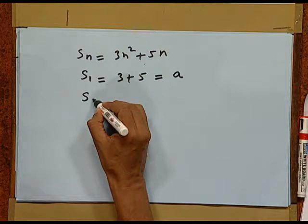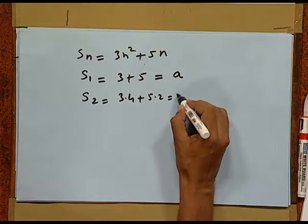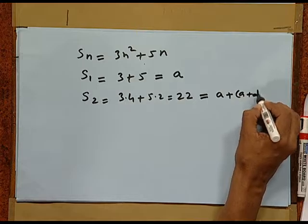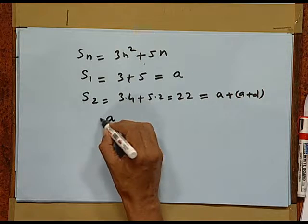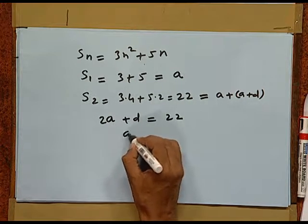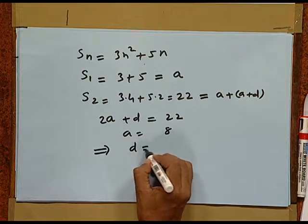Now, put n equal to 2. You get s2 is equal to 3 times 4 plus 5 times 2, that is 22, and this is nothing but first term plus second term. Thus, we have 2a plus d is equal to 22, while a is equal to 8. This gives d is equal to 6. And now we know both a and d, we can find the whole thing about the series.